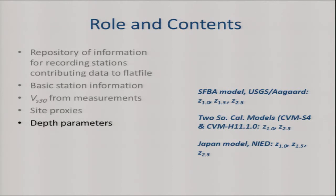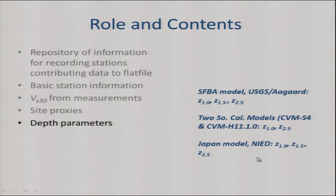With the help of folks from the USGS and others, we have updated depth parameters — basin depths — for the San Francisco Bay Area, Southern California, and Japan. We were using Brad Aagaard's latest models for Northern California. Z1 is the depth to the 1 km/s shear wave isosurface, and then we also have Z1.5 and Z2.5. With the help of Tadahiro Kishida and colleagues in Japan, we were also able to get some depth parameters from Japan.